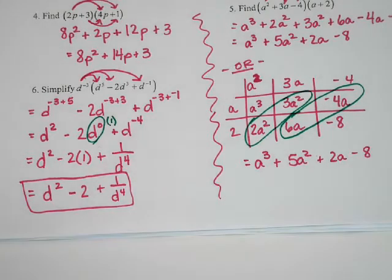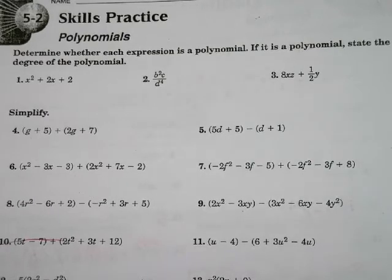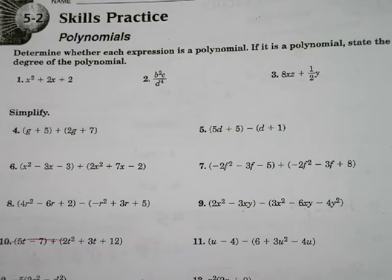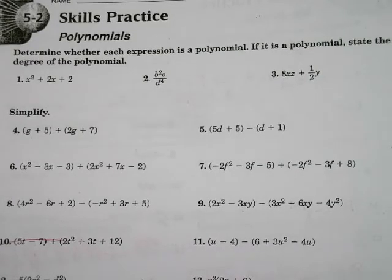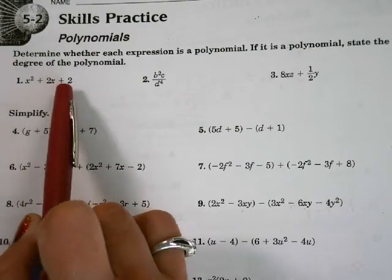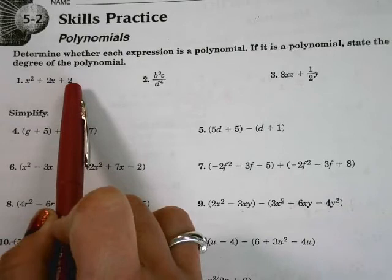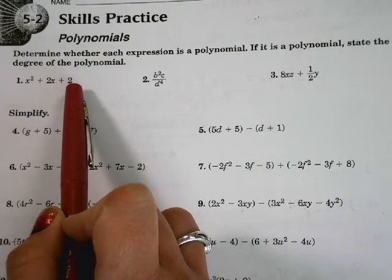Grab your worksheet and let's go through a few more examples together. It says 247 at the bottom. Look at number 2 because that one looks a little funny. First, determine whether each expression is a polynomial — if it is, state the degree. Number 1: nothing crazy going on, it's a polynomial with nice pretty exponents, no variables under radicals, no negative exponents. That guy is a polynomial.